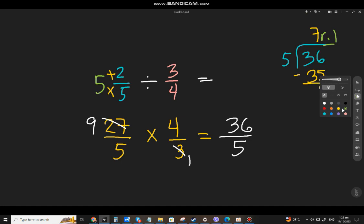Now again, the quotient, that will be the whole number. The remainder, that will be the numerator. And the divisor, that will be the denominator. So for the question 5 and 2⁄5 divided by 3⁄4, the answer will be 36 over 5 or 7 and 1⁄5.